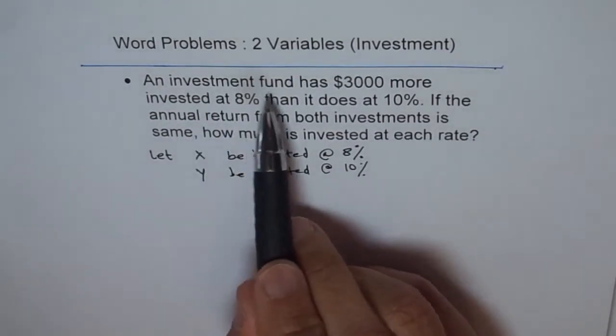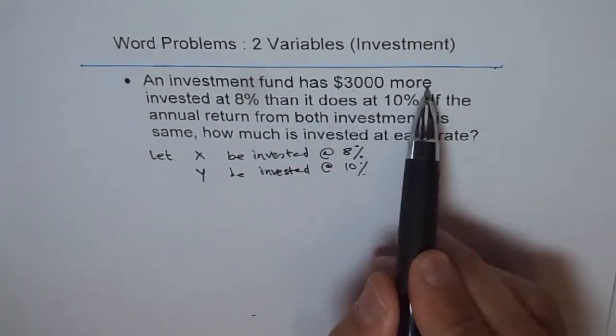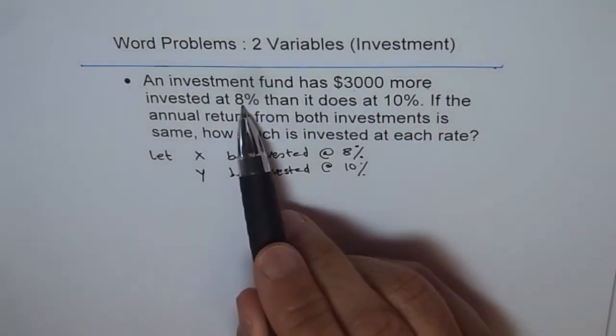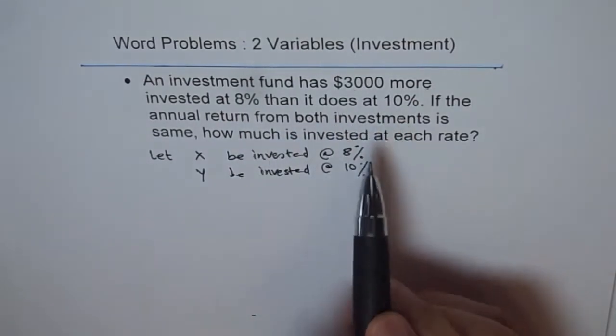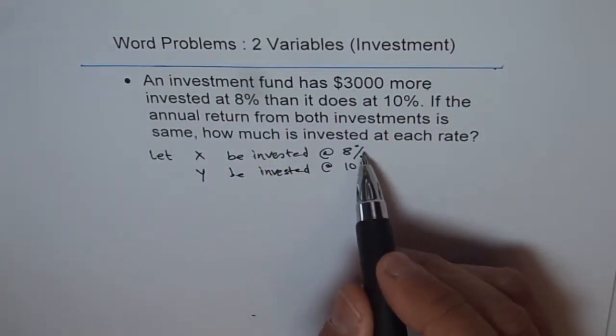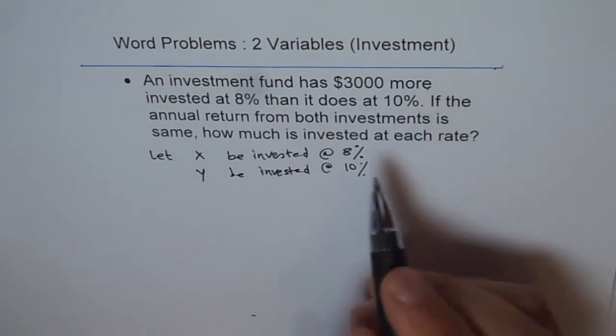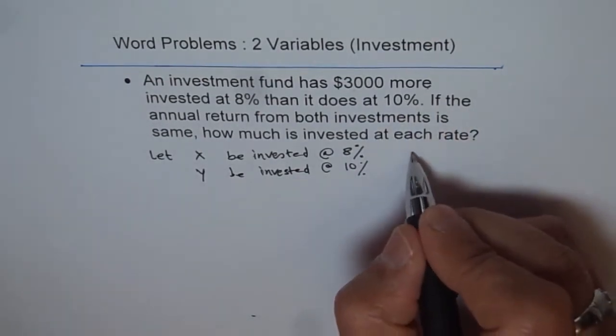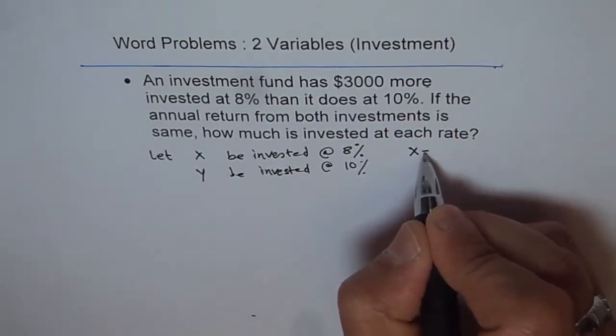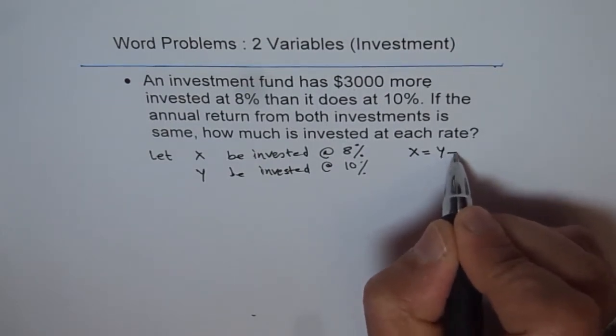Let X be invested at 8% and Y be invested at 10%. Now it says an investment fund has $3,000 more invested at 8% than it does at 10%. That means we get our equation: X equals Y plus $3,000.